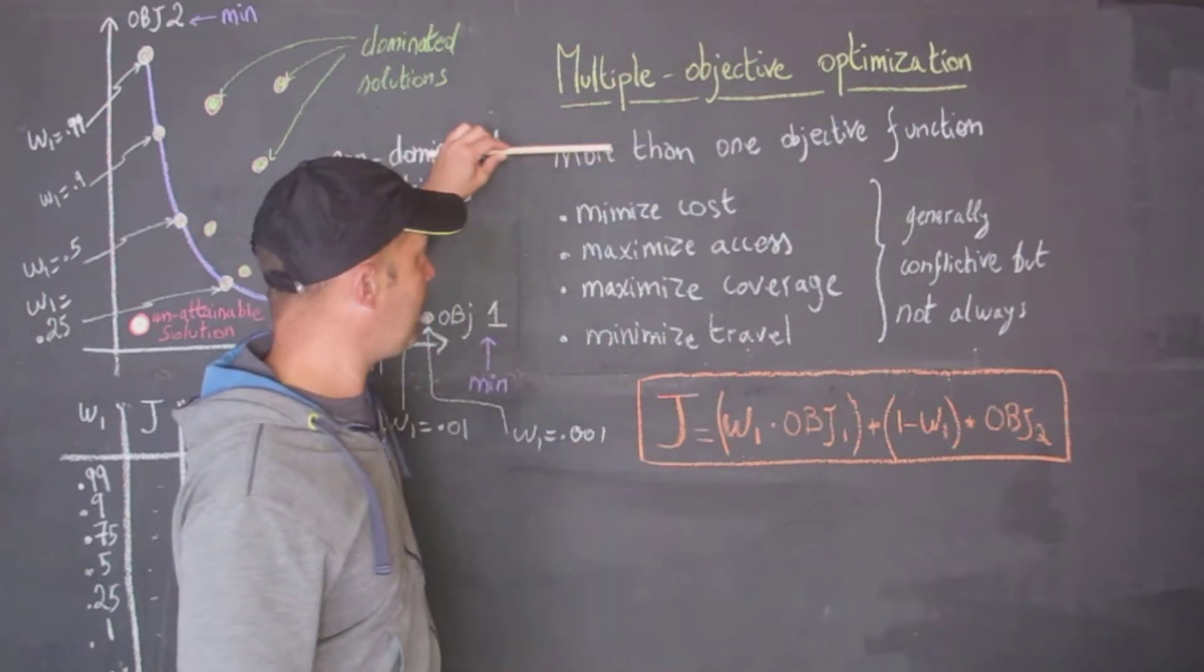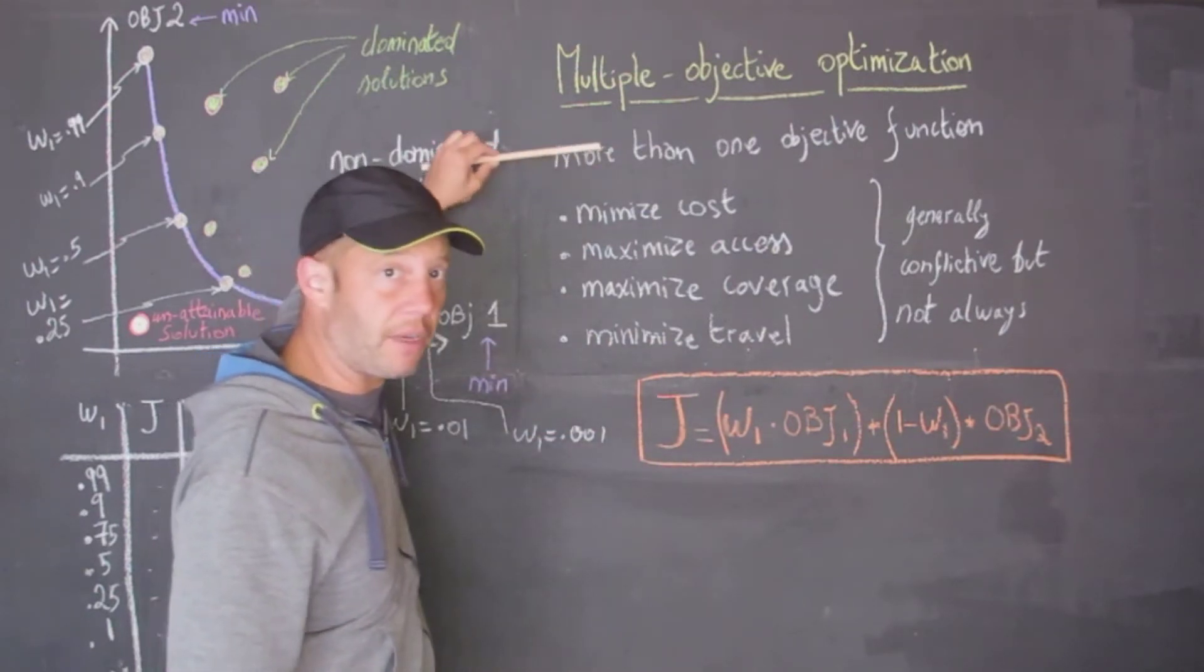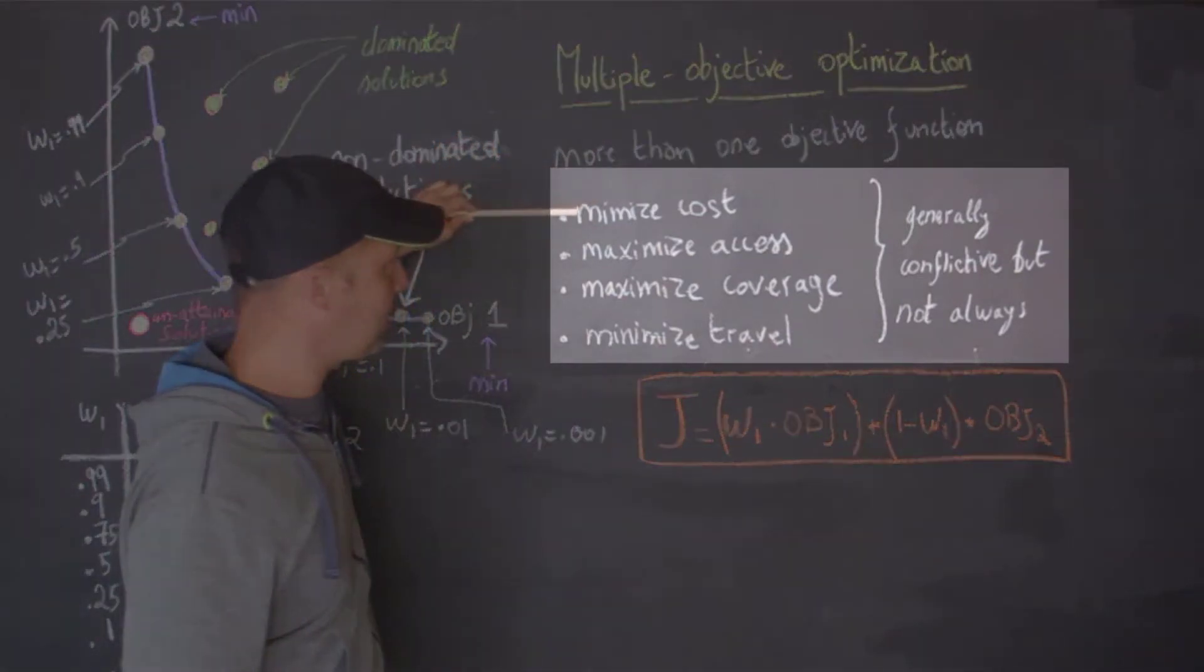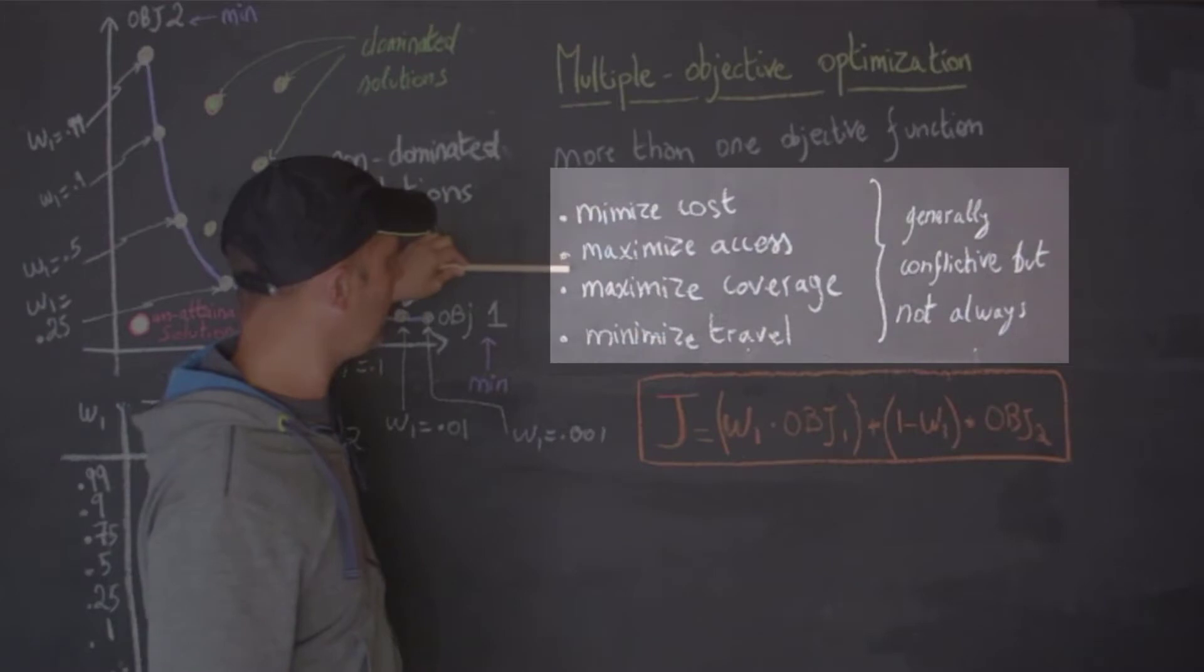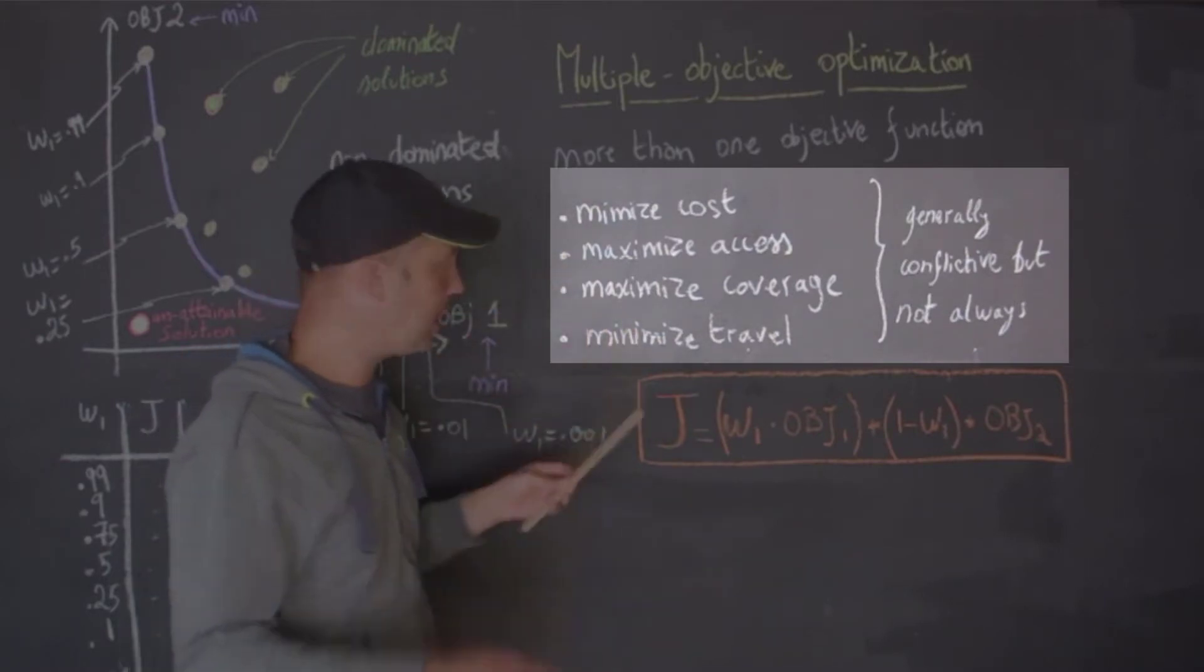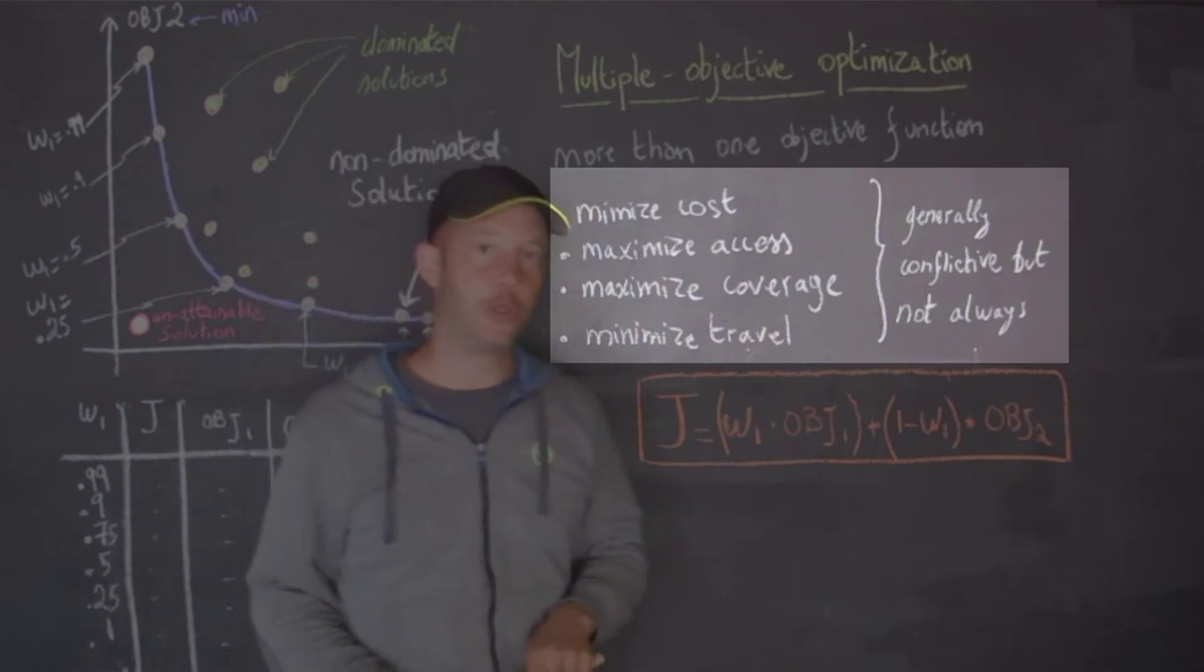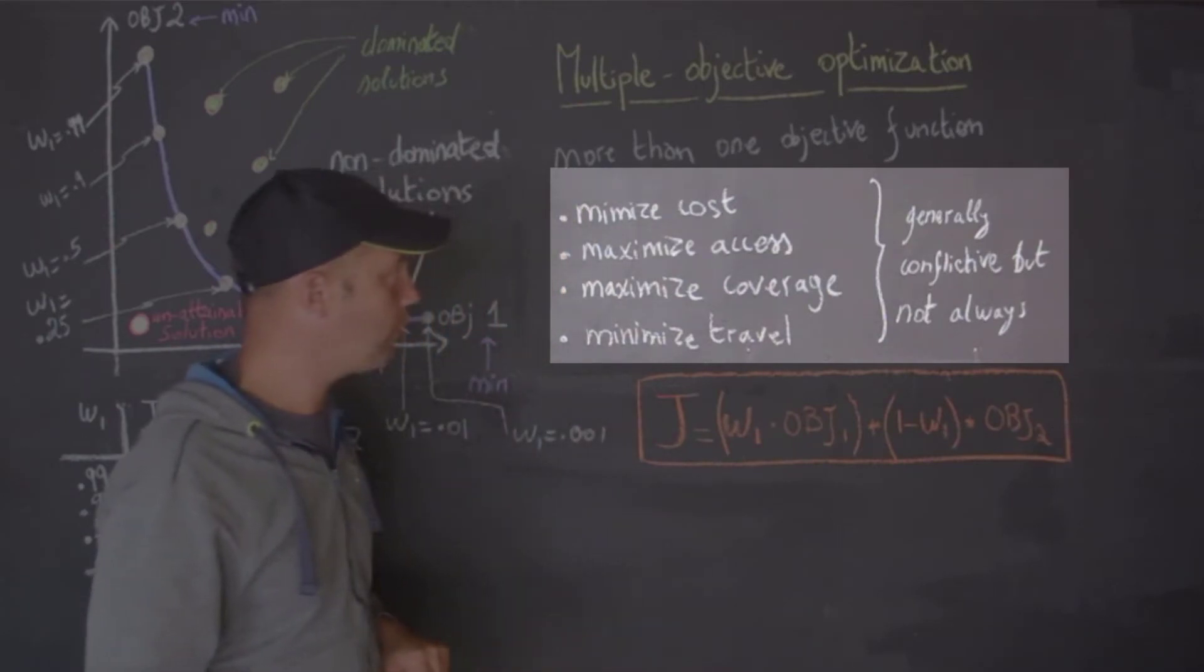Let's look at different kinds of objectives that we would see in optimization: minimizing the cost of facilities, maximizing access like in the case of healthcare, maximizing coverage in the case of a cell tower, or minimizing travel for students who are traveling to a school. Generally these objectives are conflicting, but not always.